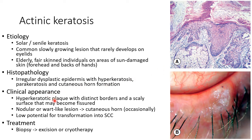Coming to the clinical appearance, the lesion is a hyperkeratotic plaque with distinct borders and a scaly surface that may become fissured, as you can see in this picture. Occasionally there can be a nodular or wart-like lesion which can lead to the formation of a cutaneous horn. Actinic keratosis has a very low potential for transformation into squamous cell carcinoma; however, it is important to remember that transformation into squamous cell carcinoma is a rare possibility.